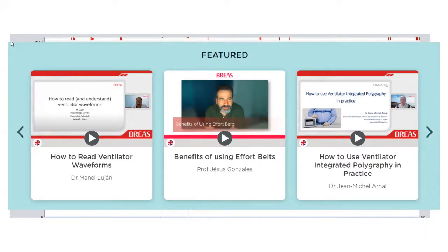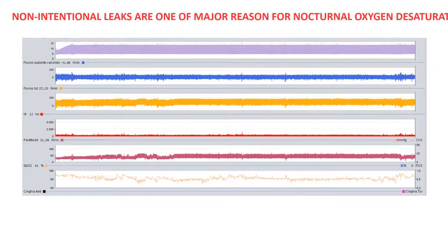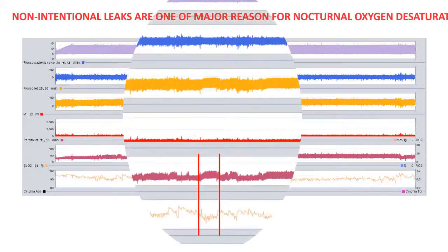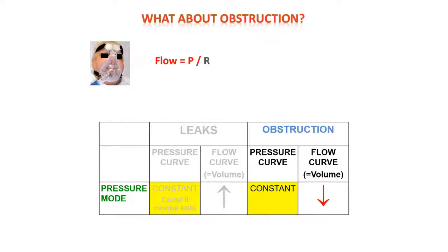I invite you to follow the next webinar where how to read flow signals in detail will be explained better. What is important coming back to monitoring is to know that non-intentional leaks are one of the major determinants of oxygen desaturation and also one of the major determinants of asynchrony. So it is really important to look for leaks first when you detect oxygen desaturation.